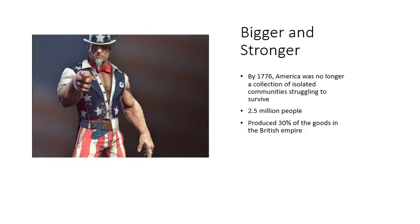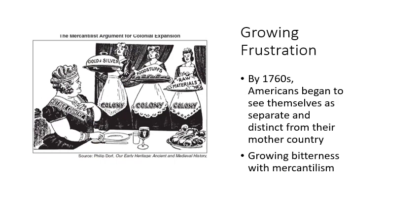These American colonies were growing bigger and stronger. By 1776, America was no longer a collection of isolated communities struggling to survive, as we saw with Jamestown and the Massachusetts Bay Colony. It had grown immensely — 2.5 million people lived in the American colonies and they produced 30% of the goods in the entire British Empire. Many colonists were growing frustrated. By 1760, Americans began to see themselves as separate and distinct from their mother country, identifying as Americans rather than British or Scots-Irish, seeing that they had their own distinct area.